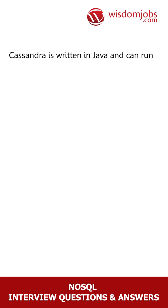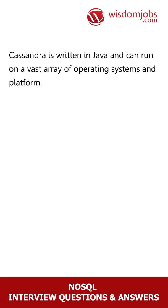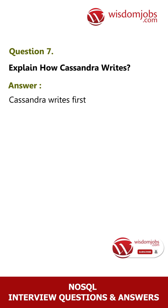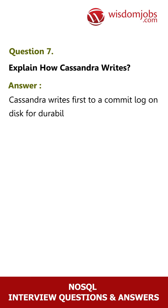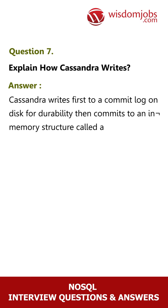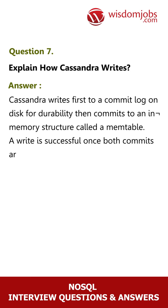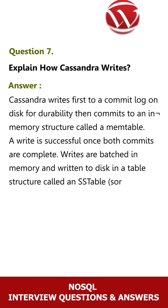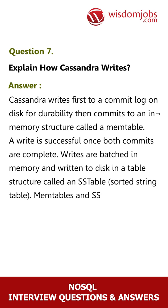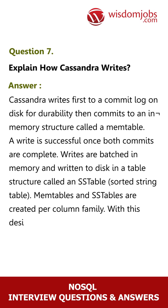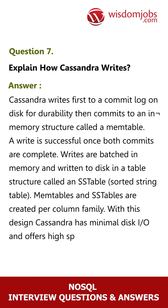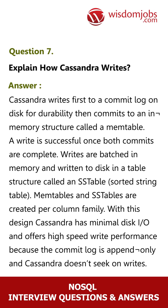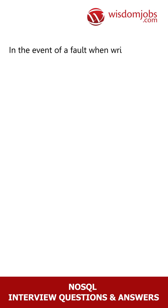Question 7: Explain how Cassandra writes. Answer: Cassandra writes first to a commit log on disk for durability, then commits to an in-memory structure called a MemTable. A write is successful once both commits are complete. Writes are batched in memory and written to disk in a table structure called an SSTable (Sorted String Table). MemTables and SSTables are created per column family. With this design, Cassandra has minimal disk I/O and offers high-speed write performance because the commit log is append-only and Cassandra doesn't seek on writes.